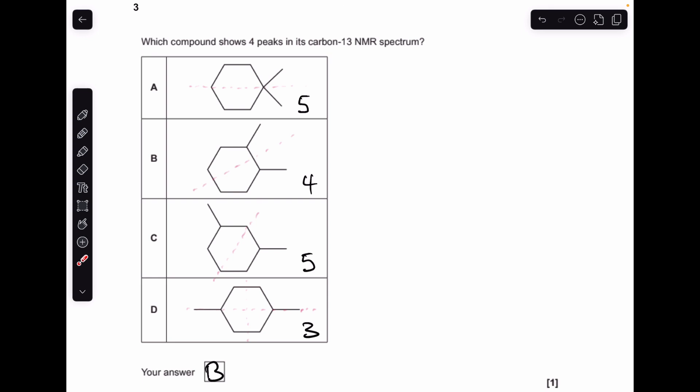And just for revision purposes, we'll just quickly look at C and D to say why they're not the right answer. So C, you've got one, two, three, four, five. And the last one, one, two, and all of these are equivalent, so there's only three carbon environments in that one.